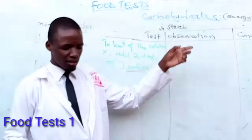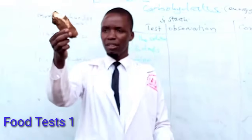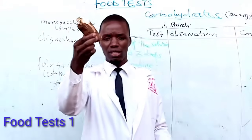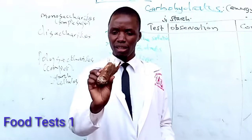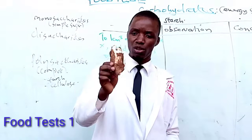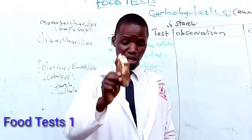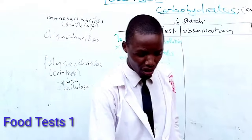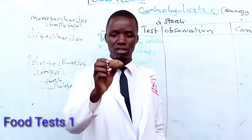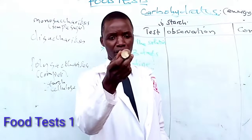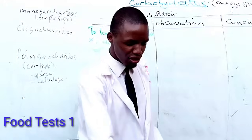Which foods contain starch? Foods like cassava — this cassava contains starch. For those of you who don't know cassava, in Uganda we grow cassava and this is how it looks. We have also got sweet potatoes — this is sweet potato, and it also contains a lot of starch.